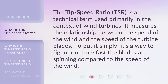The Tip-Speed Ratio, or TSR, is a technical term used primarily in the context of wind turbines. It measures the relationship between the speed of the wind and the speed of the turbine blades. To put it simply, it's a way to figure out how fast the blades are spinning compared to the speed of the wind.